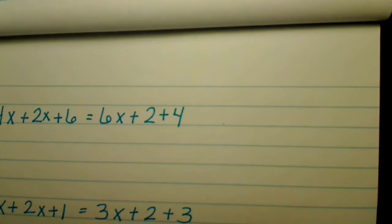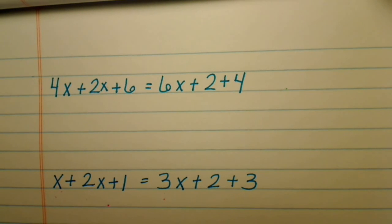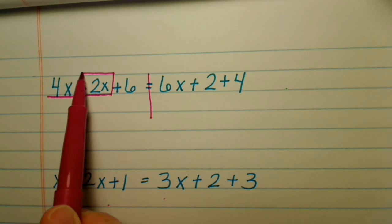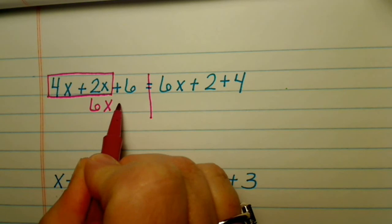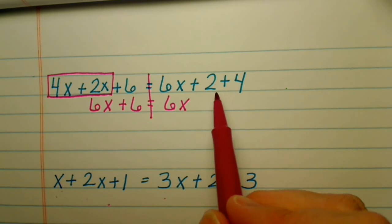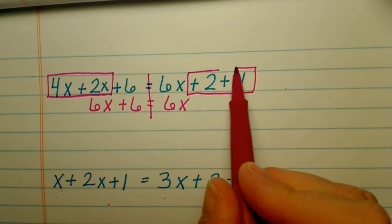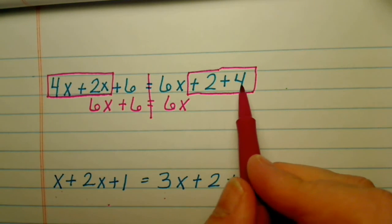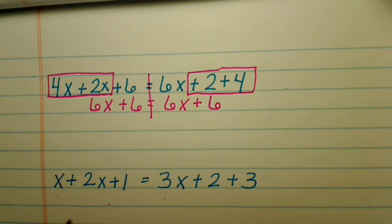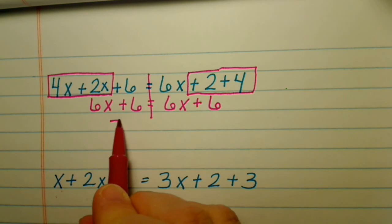Let's look at some more examples. What's the first thing you're going to do on this problem? You're going to combine your like terms, since there are no parentheses for the distributive property. Combine the like terms on the left side, and also the like terms on the right side — making sure to look for all of them, including constants without variables. Look — we have the same thing on both sides. If you have the exact same thing on both sides, the type of solution is infinite.